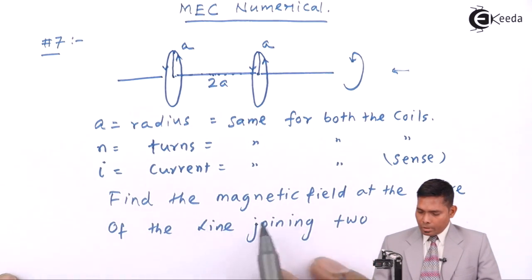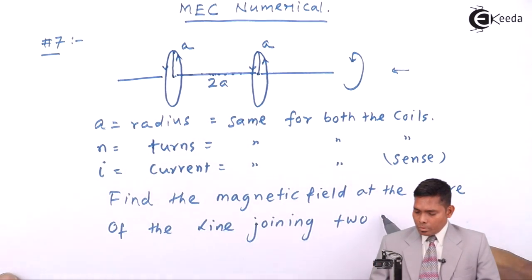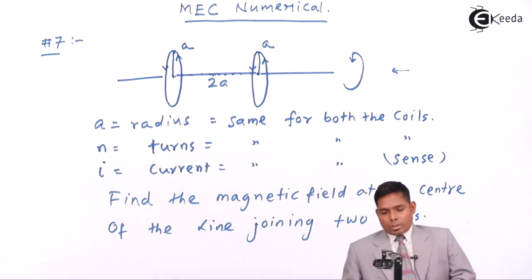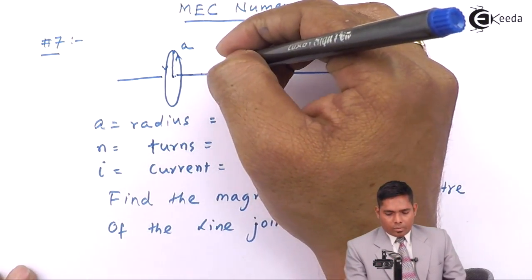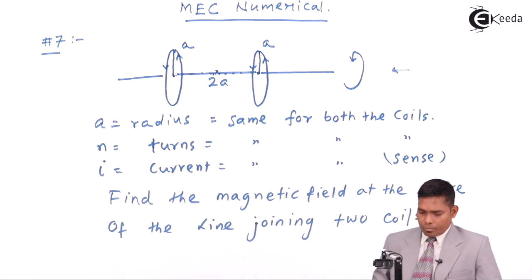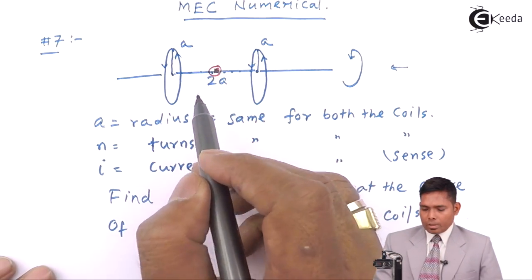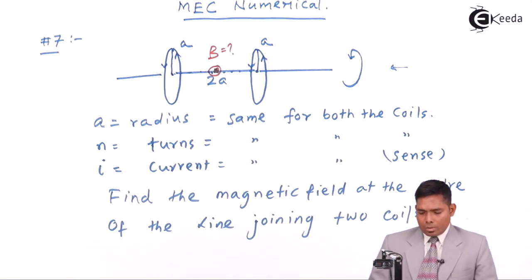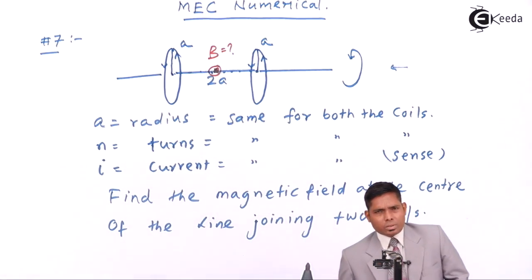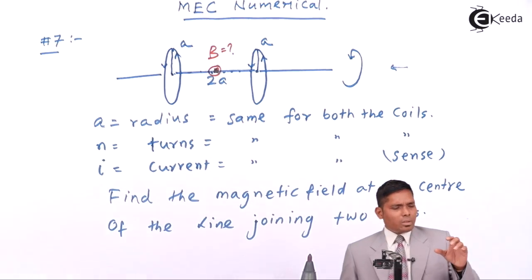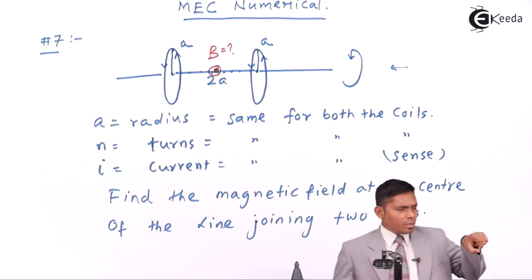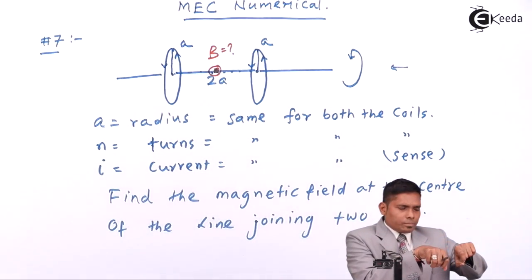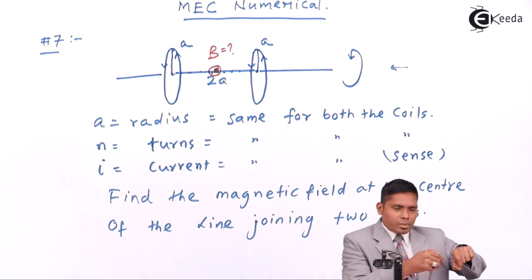Find the magnetic field and direction of the net magnetic field produced at the midpoint of the line joining the centers of the two coils. That means at this midpoint, you have to find B. This question is very simple — there is one coil here and another coil here, and you have to find the field in between the two. Current is in the same sense.